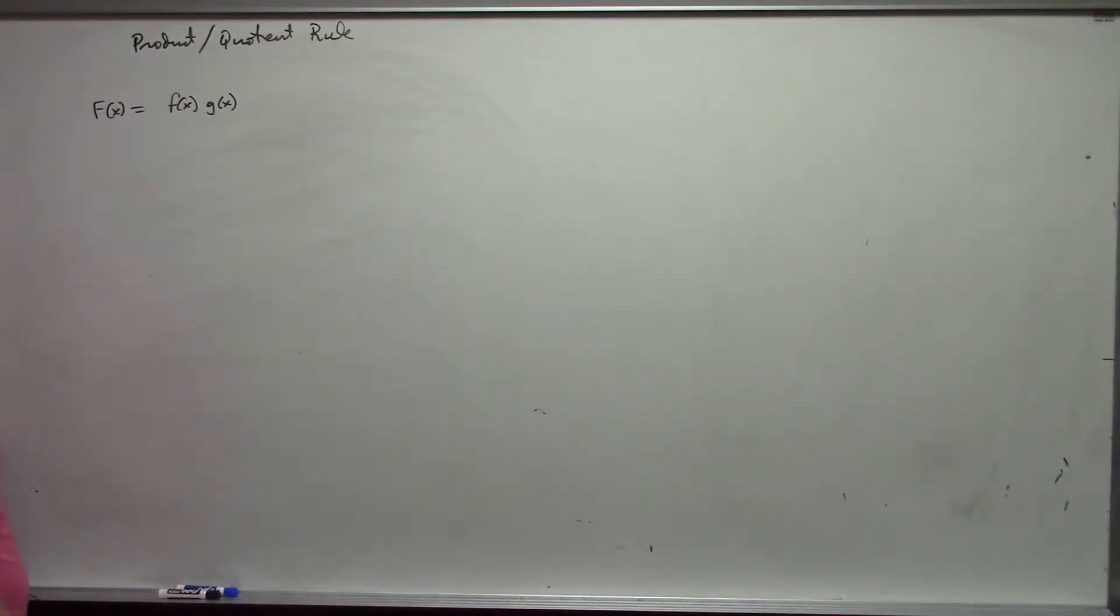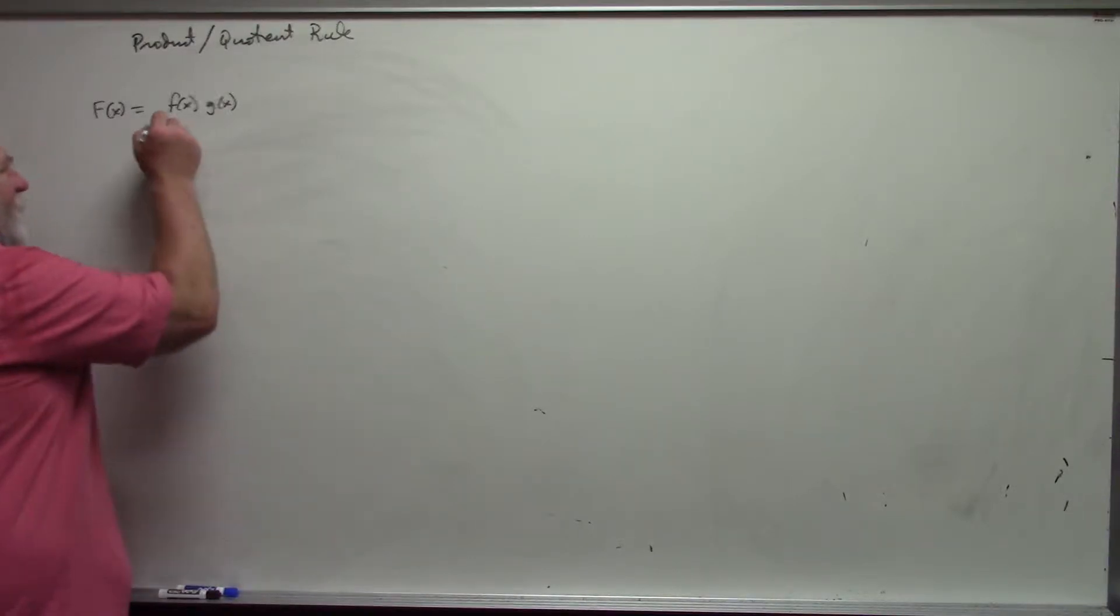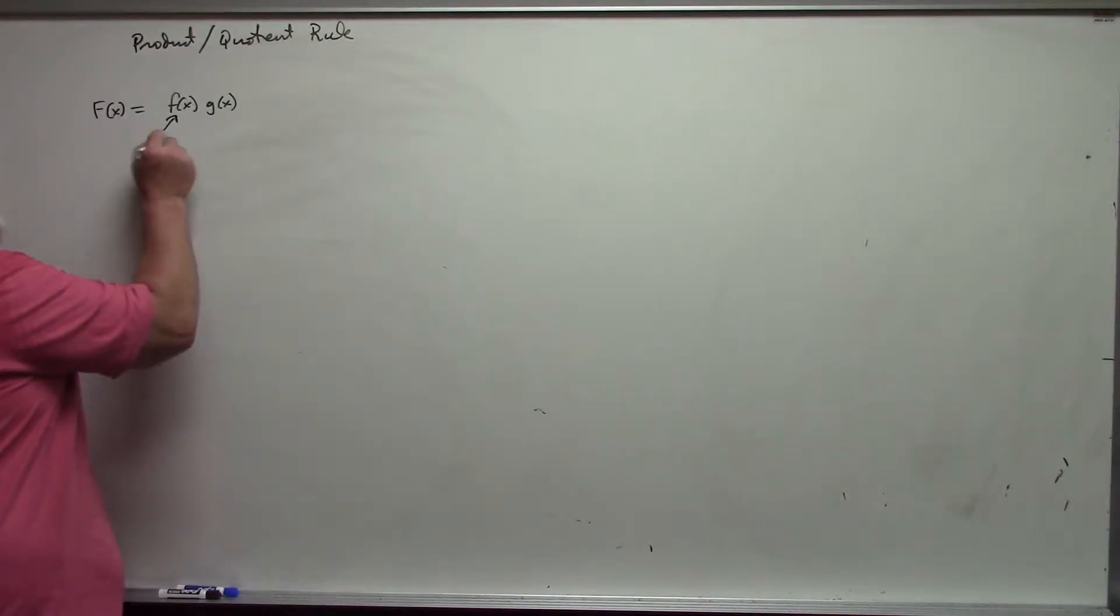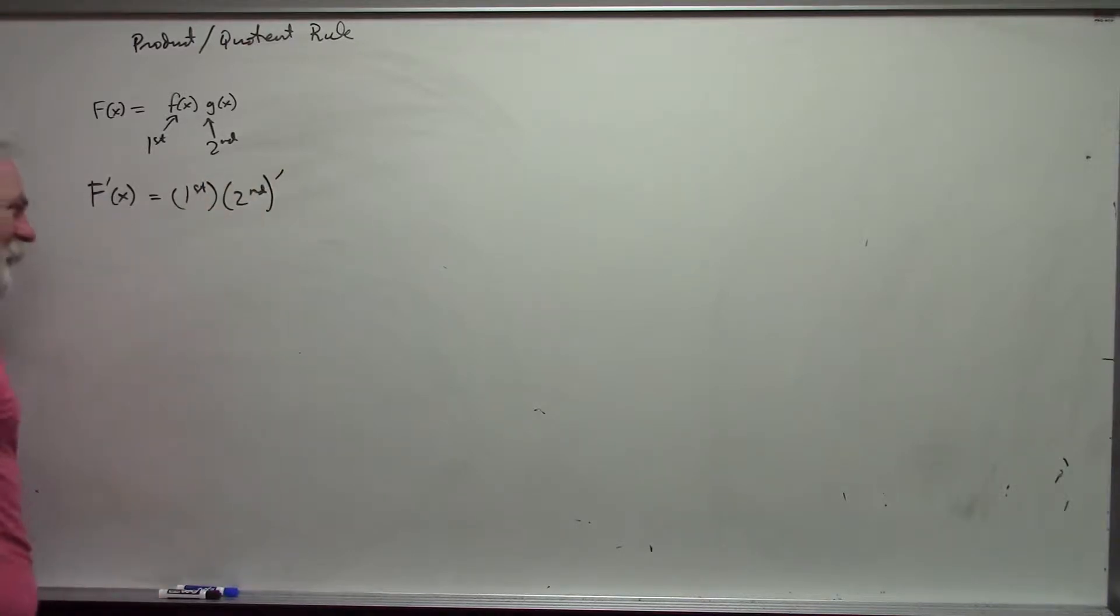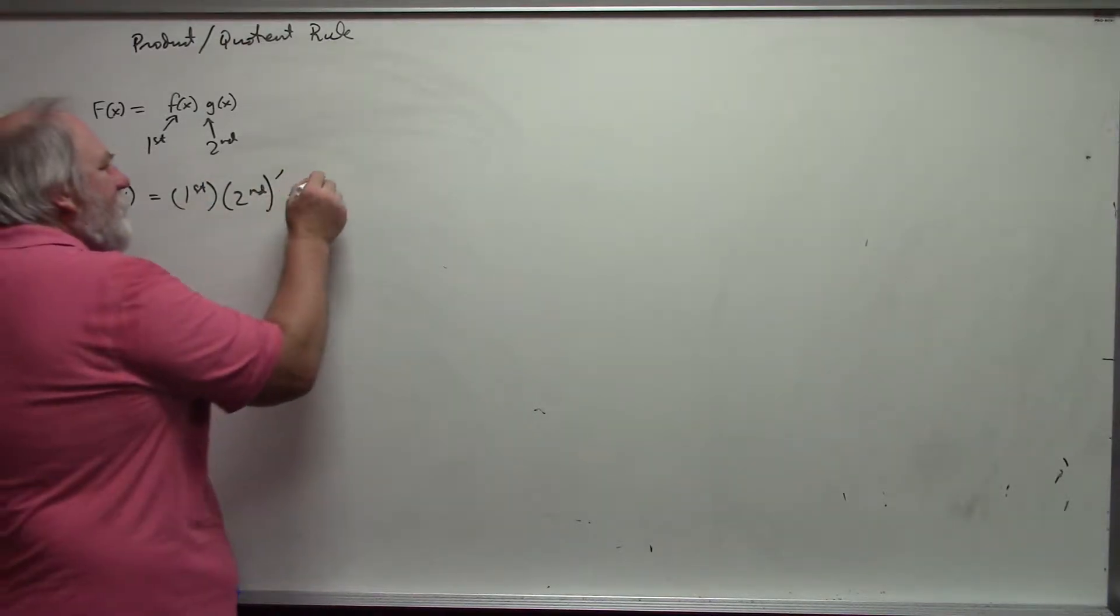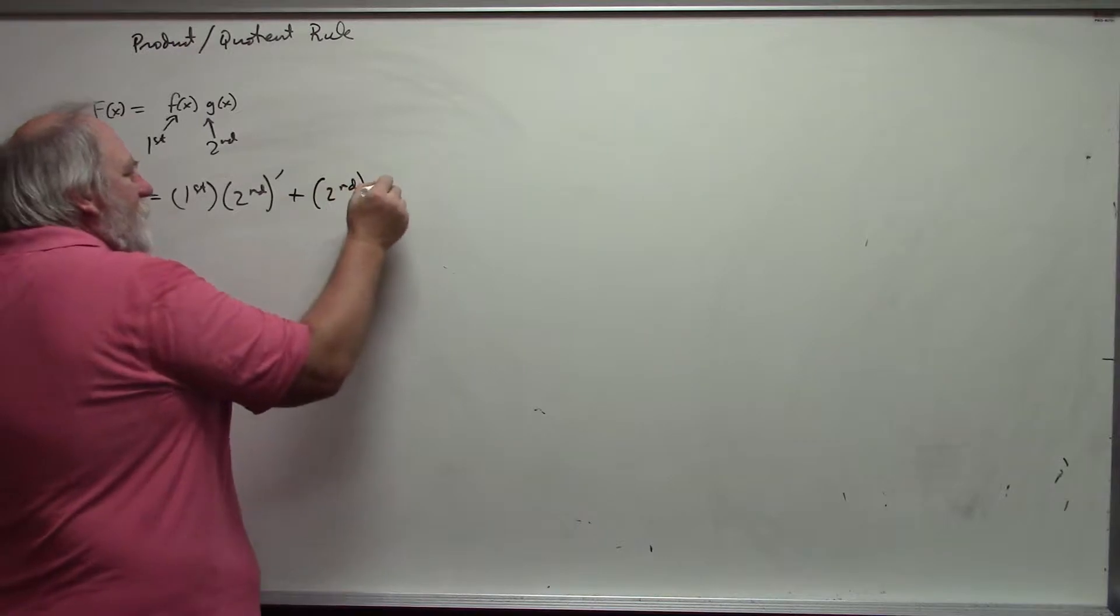The way we generally do this, rather than think of it in terms of names, we think of it in terms of a first function multiplied by a second function. And so my derivative in this case would be first times the derivative of the second, plus the second times the derivative of the first.